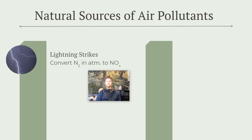Lightning strikes are a natural source of NOx — nitrogen oxides — in the atmosphere. The energy from a lightning strike can convert N2 gas, which makes up about 78% of the atmosphere, into NO2 or NO, which are nitrogen oxides.